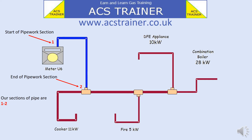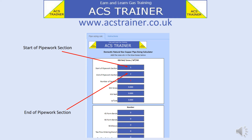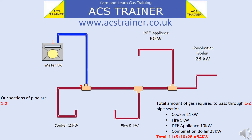We are now ready to calculate the first section of pipe — from the meter, point one, to the first tee, point two. This is highlighted blue. This is the pipe we will calculate first. On the pipe sizing calculator, put the numbers one and two in the boxes stating start of pipe section and end of pipe section.